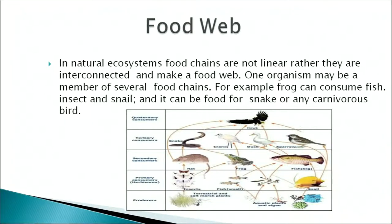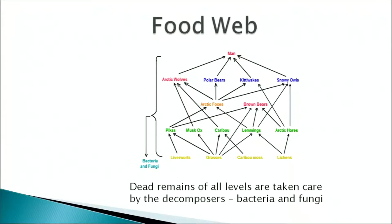In natural ecosystems, food chains are never linear; rather they are interconnected and make a food web. One organism may be a member of several food chains. For example, a frog can consume fish, insects and snails, and can itself be food for a snake or carnivorous bird. In a small aquatic ecosystem, phytoplanktons are the main producers, zooplanktons are the first-level consumers, consumed by large fishes, which can be consumed by birds on the shore. The dead remains of all levels are taken care of by decomposers — bacteria and fungi — which return nutrients to the substrate for recycling.